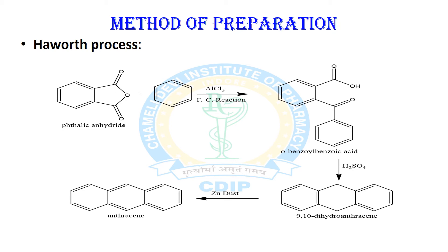The Haworth process is usually used for the formation of polynuclear hydrocarbons like phenanthrene and anthracene. For the formation of anthracene, you can take succinic anhydride and react it with benzene under Friedel-Crafts reaction conditions, resulting in orthobenzoylpropionic acid. This subsequently undergoes dehydration with H2SO4 to produce a 9,10-dihydroanthracene molecule, which then again undergoes dehydrogenation with zinc dust, resulting in the formation of anthracene.